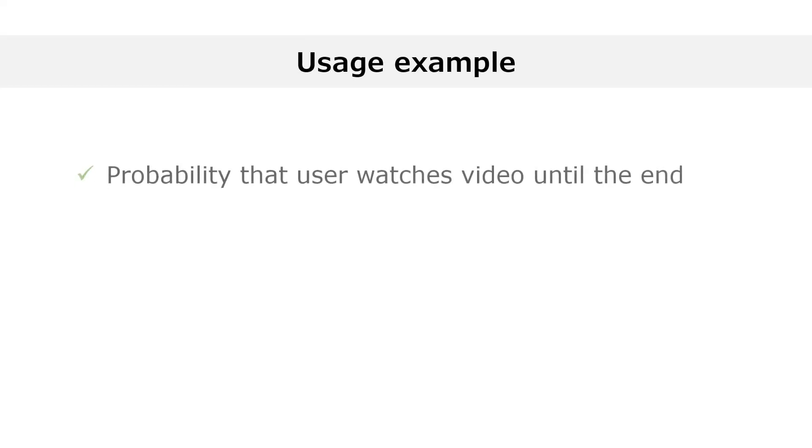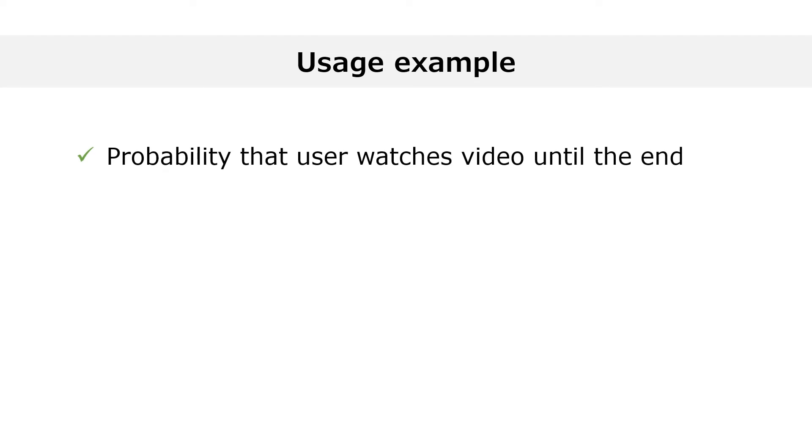For example, I am interested in the probability that you will watch this video until the end. I do not know what this probability is, and I model my uncertainty by using a beta distribution.